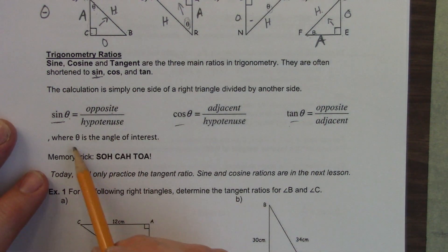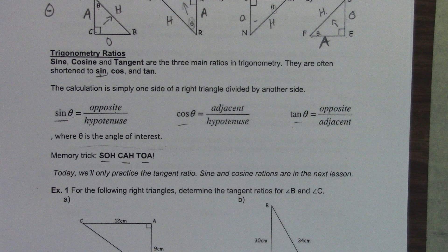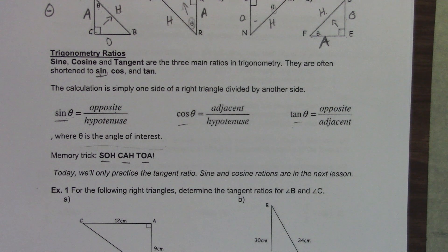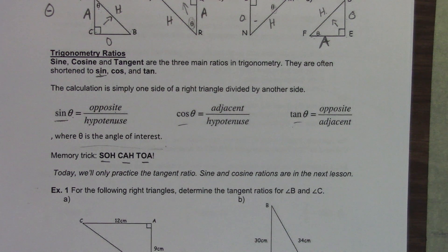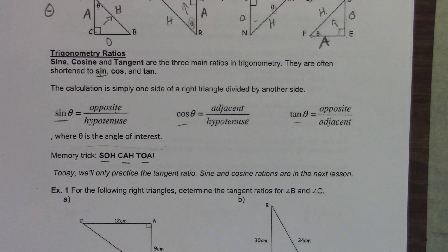SOH-CAH-TOA is the memory trick - where theta is the angle of interest. Cosine theta equals adjacent over hypotenuse. Tangent equals opposite over adjacent. If someone asks you what sine or cosine is, you simply say it's a ratio - it's the ratio of side lengths of a triangle.